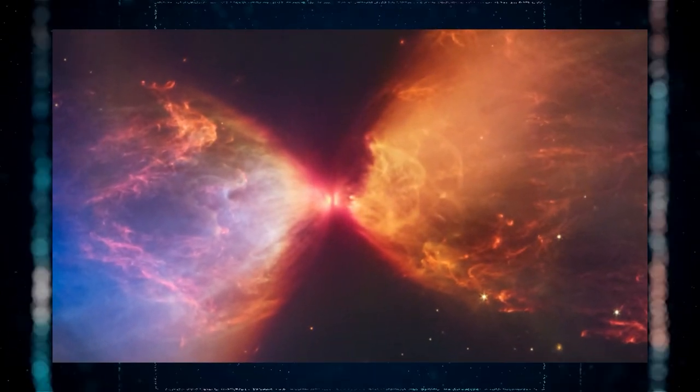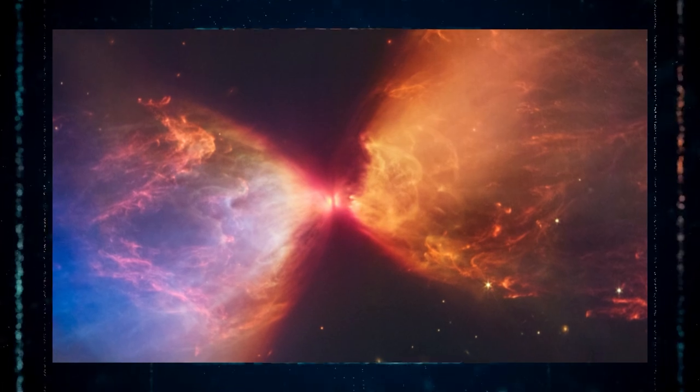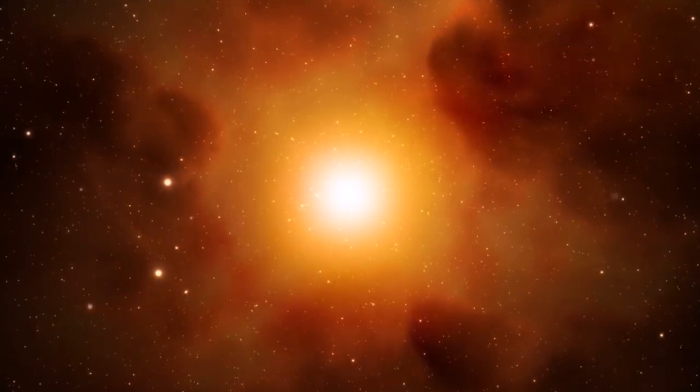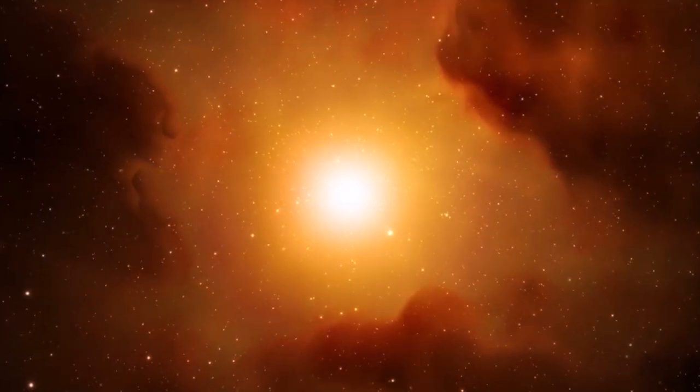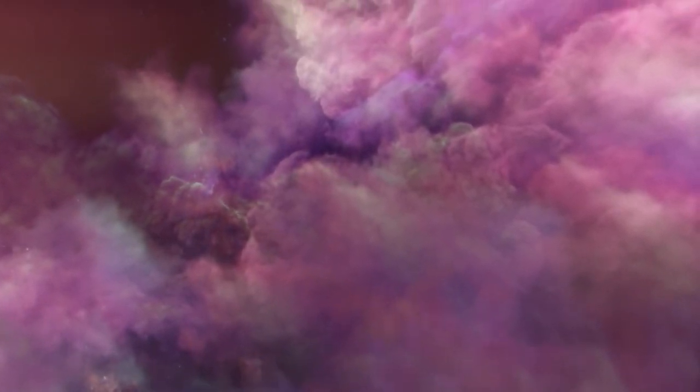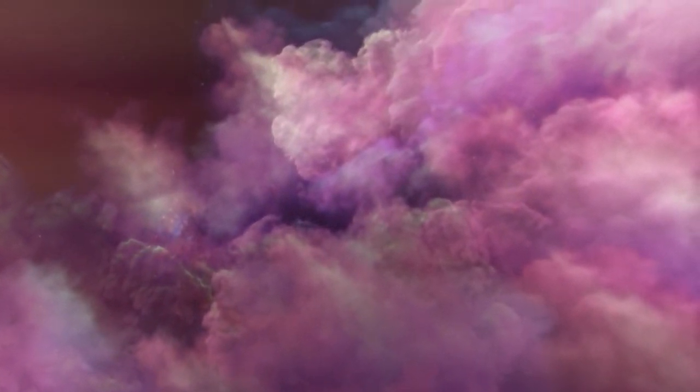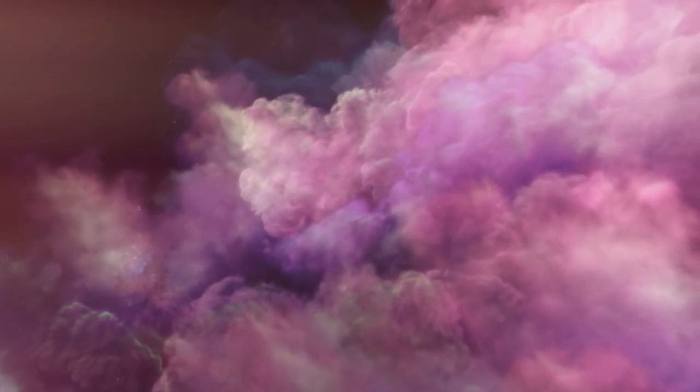L1527 presents a youthful star a mere 100,000 years old, classified as a Class 0 protostar, symbolizing its early stage in star formation, as per NASA. Protostars like L1527 have a lengthy journey ahead before they can blossom into fully-fledged stars, which elucidates their encapsulation within the enigmatic shroud of dust and gas.